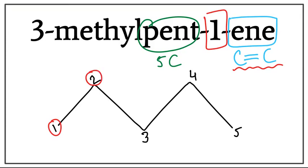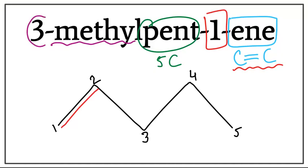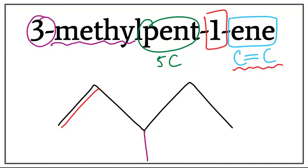Let's draw the double bond. There is also a methyl attached to the parent chain, which is on carbon number 3. So let's get rid of these numbers and attach the methyl on the third carbon. This is the structure for 3-methyl-pent-1-ene, or 3-methyl-pentene.